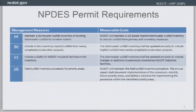The measurable goal is a GIS-based implicit stormwater outfall inventory. Unlike some other states such as Virginia, which are responsible only for municipalities and their outfalls, North Carolina's permit is statewide. The state manages over 80,000 lane miles as well as all DOT facilities — a unique challenge. That's why they have an implicit inventory, meaning it is not a field-truthed outfall inventory.